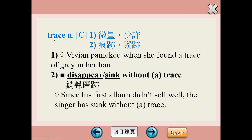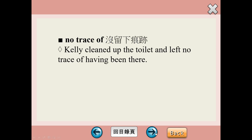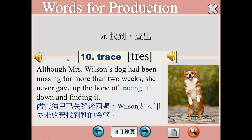英文裡當trace這個字是痕跡時，有一個很棒的片語叫做disappear without a trace，或者是sink without trace，就是消聲匿跡，完全消失找不到蹤影。No trace of這個片語是沒有留下痕跡。Trace可以當動詞，叫做查出來找到。Although Mrs. Wilson's dog had been missing for more than two weeks, she never gave up the hope of tracing it down and finding it.